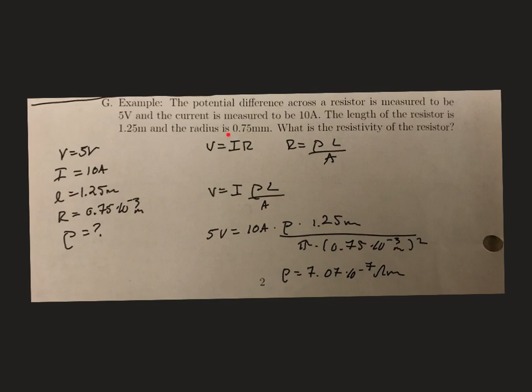We know that voltage equals current times resistance, and resistance equals the resistivity times the length divided by the cross-sectional area. So I'm going to substitute the resistance formula back into Ohm's law.